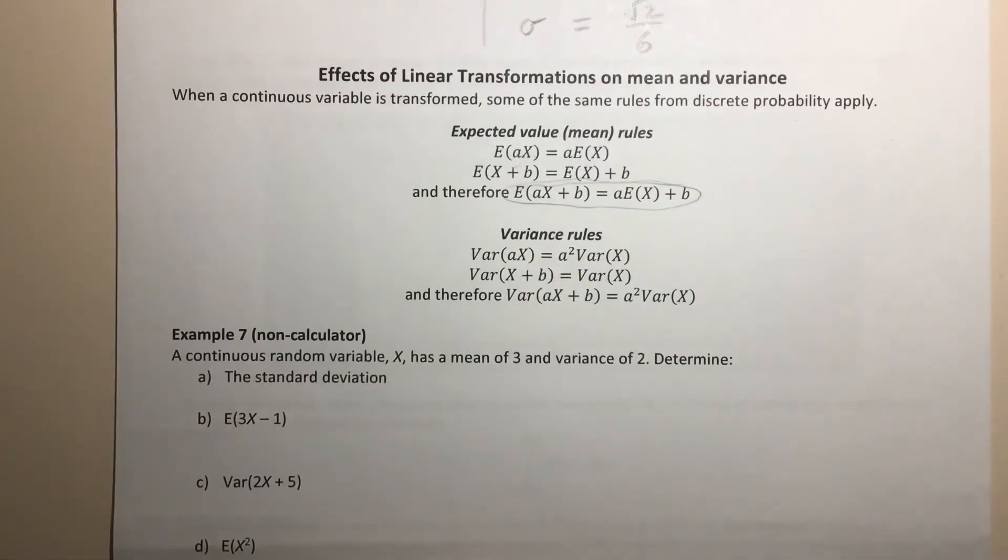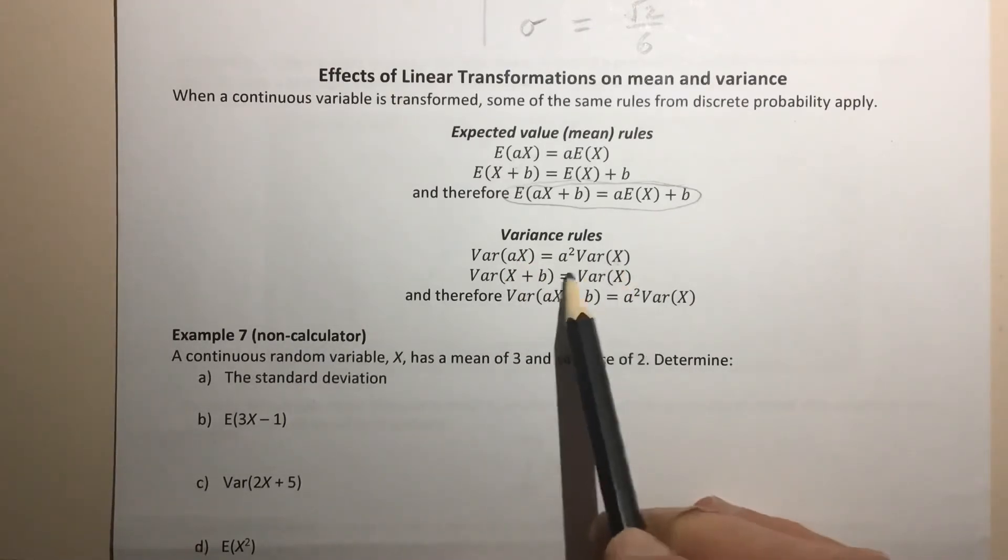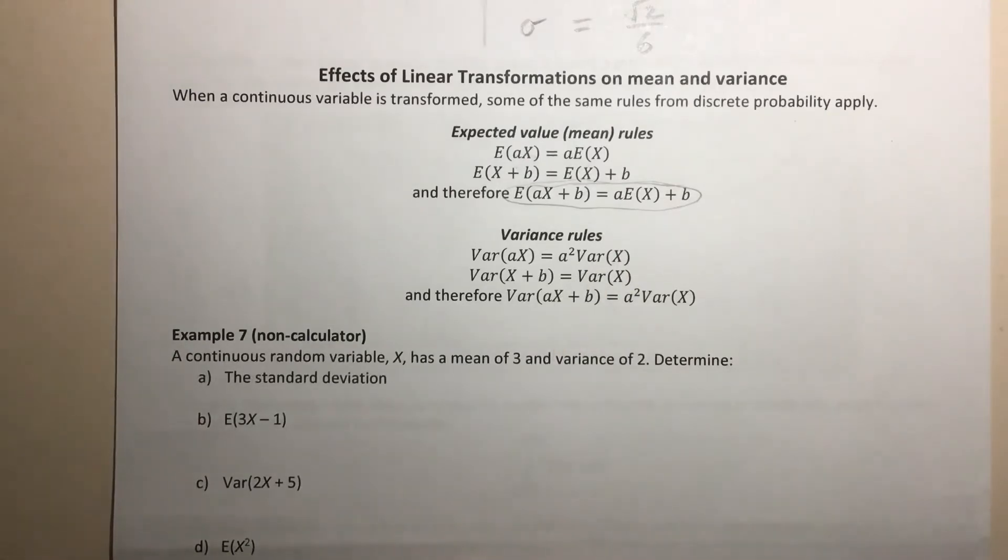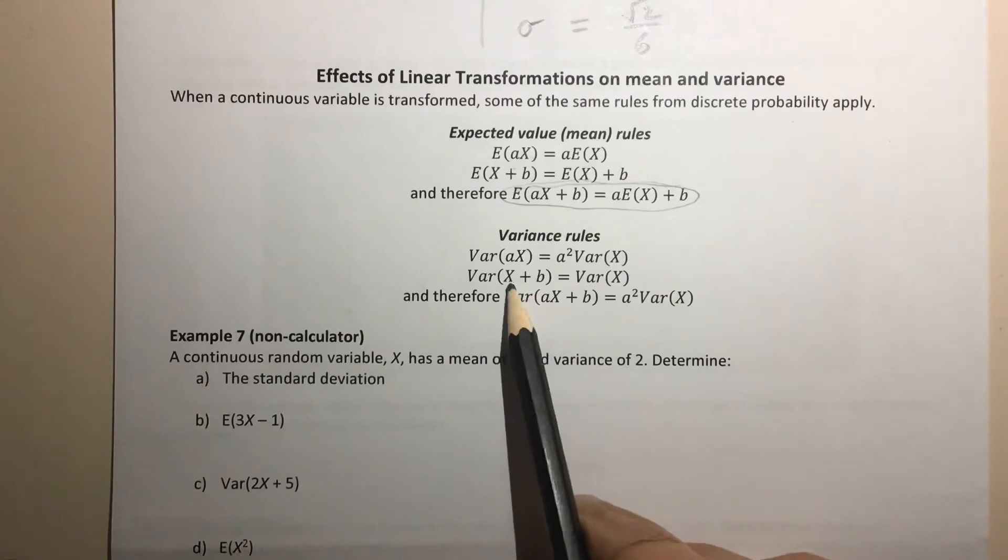those two in combination would give us this rule here. Then we've got variance rules. Now remember variance is a measure of spread, so with variance, if you multiply your variable by a, that increases the variance by a factor of a², because the way that the variance is calculated is to square the differences from the mean. However,